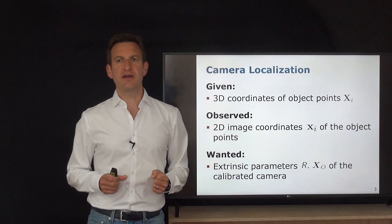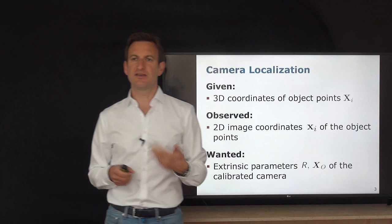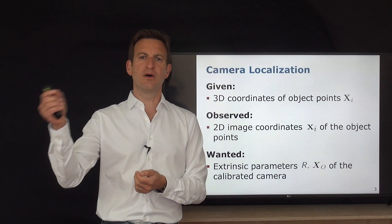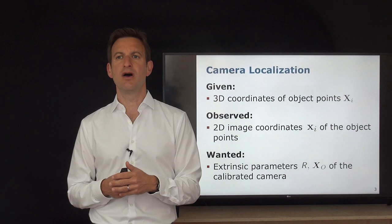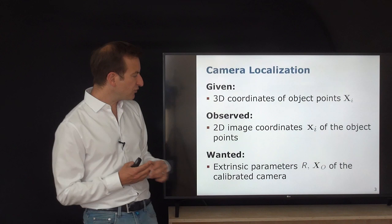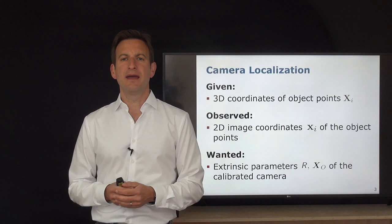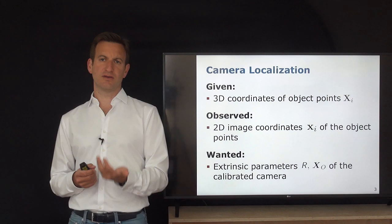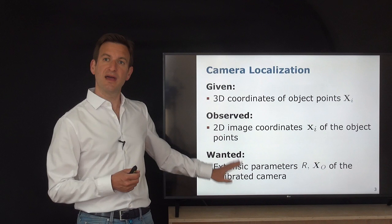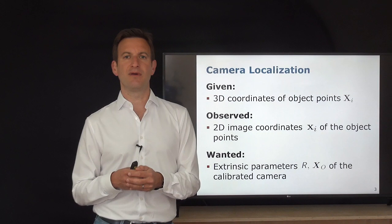Our task: given 3D coordinates of object points Xi (capital X, in the 3D world), and the observed 2D pixel coordinates xi (lowercase, the pixel location of each projected 3D point), we want to estimate the extrinsic parameters — the rotation matrix and projection center. An important assumption is that the camera is calibrated, meaning we know the calibration matrix K, unlike the Direct Linear Transform where no calibration was assumed.